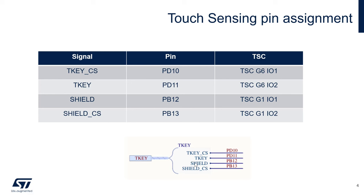Here is a table recapping the different signals for touch sensing. For the key: PD11 is TSC Group 6 IO2, and PD10 (TKEY_CS) is TSC Group 6 IO1 — same group for key and sampling cap. For the shield: PB12 and PB13 use Group 1, specifically IO1 and IO2.